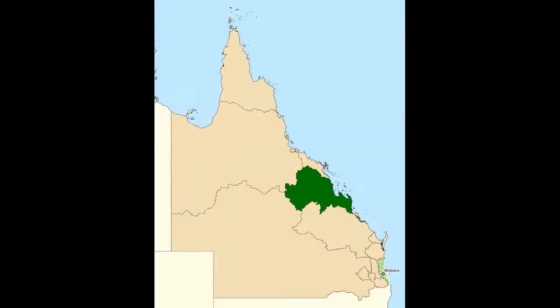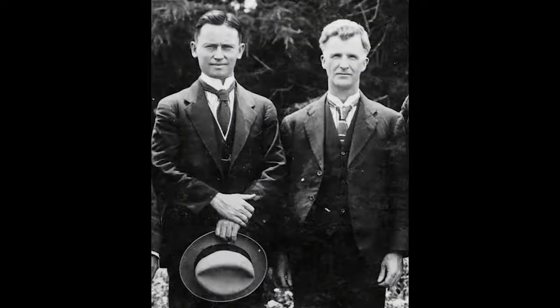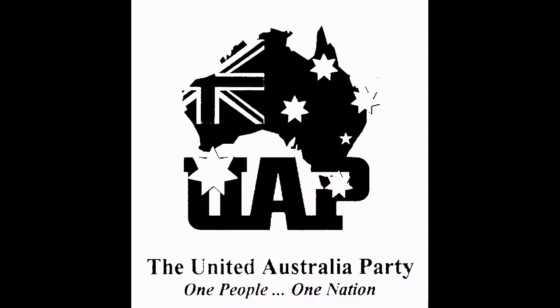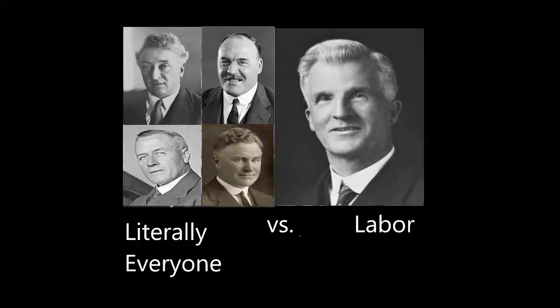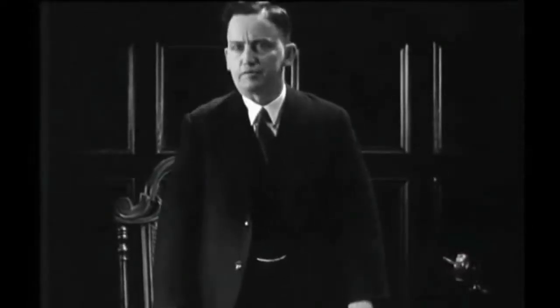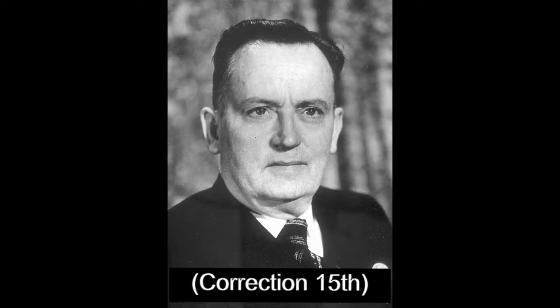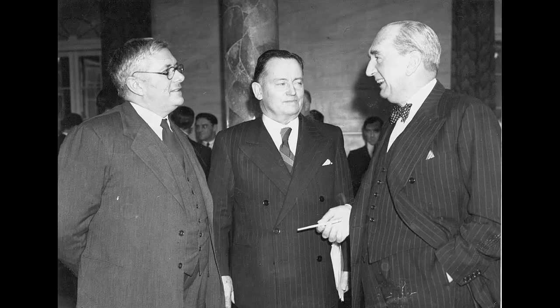Ford was a veteran politician having served in Parliament since being elected back in 1922 to the Queensland seat of Capricornia. He had served in the ill-fated Scullin government as Minister for Trade and Customs, after its previous minister James Fenton left to join the United Australia Party. After surviving the disastrous election of 1931, Ford would move up the ranks to serve as Deputy Labour Leader, where he would serve under both Scullin until his resignation and Curtin until his death, upon which Ford would become the 16th Prime Minister on the 6th of July 1945. Ford's time as Prime Minister, however, would be short-lived.